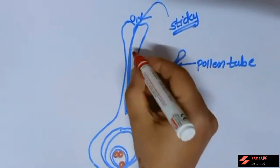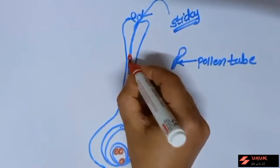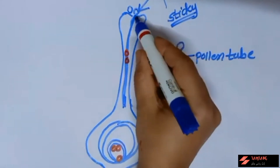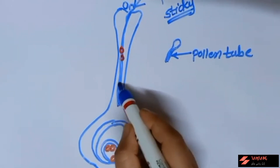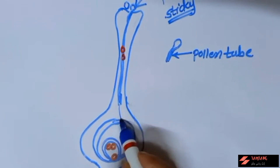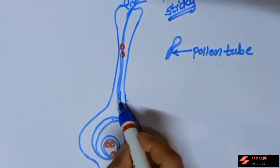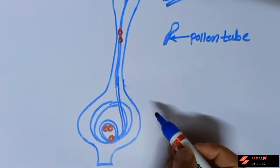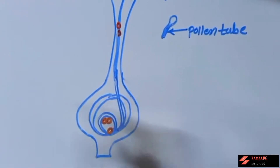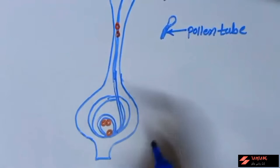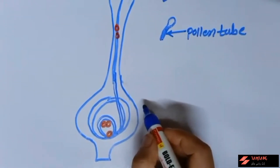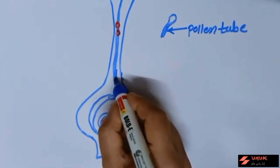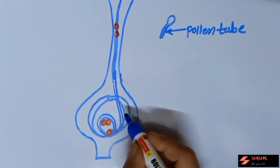The pollen tube carries two male gametes and travels through the hollow style to reach the ovary. Inside the ovary, there are two or more ovules, and in each ovule there is an embryo sac. The embryo sac is a very transparent covering made up of just a few cells formed by meiotic cell division.